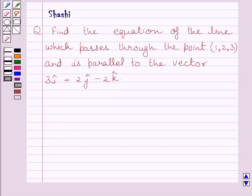First of all, let us understand that the vector equation of a line passing through a point and parallel to a given vector b is given by r vector equals a vector plus lambda multiplied by b vector.